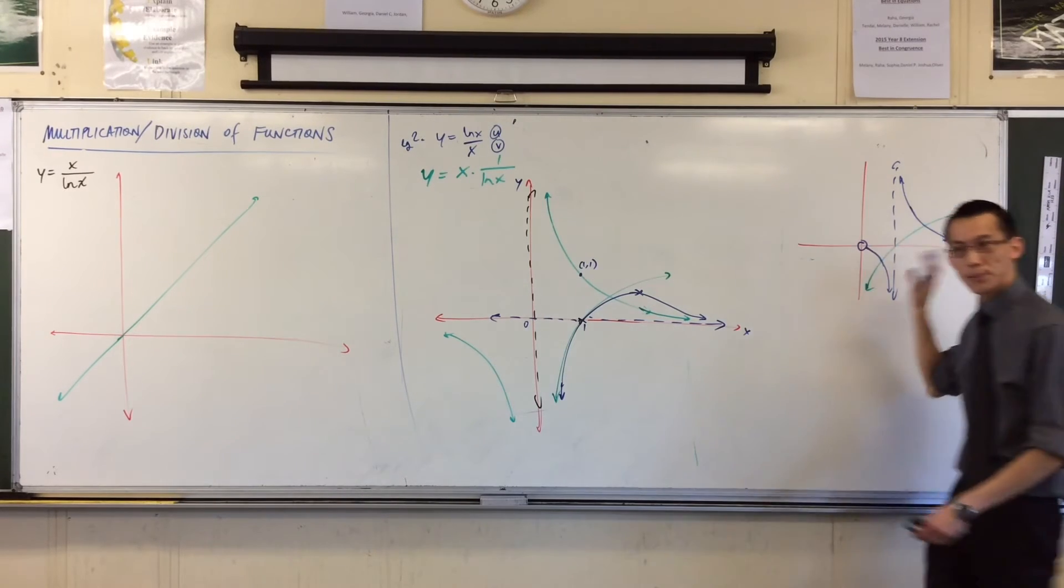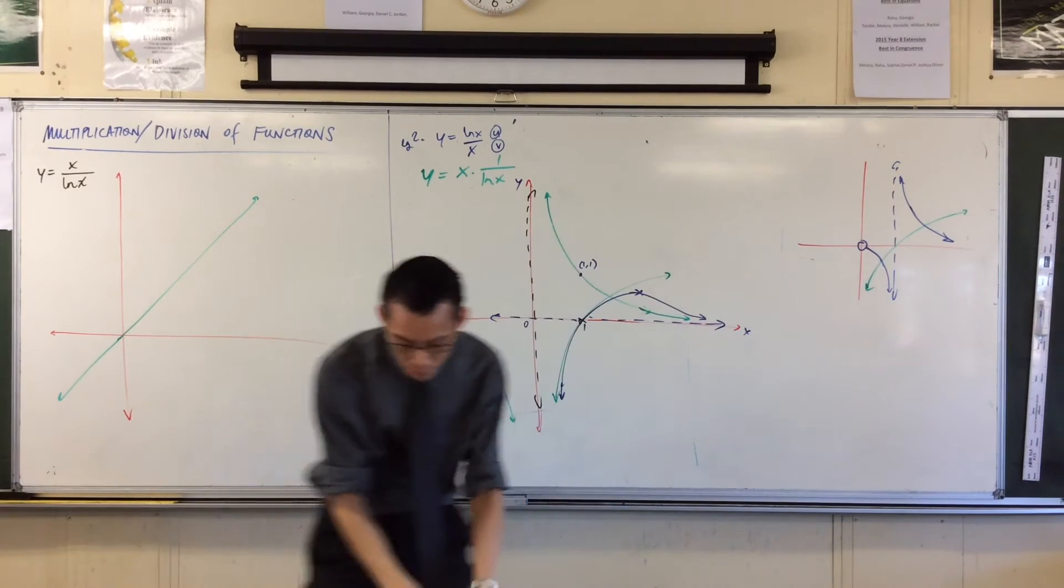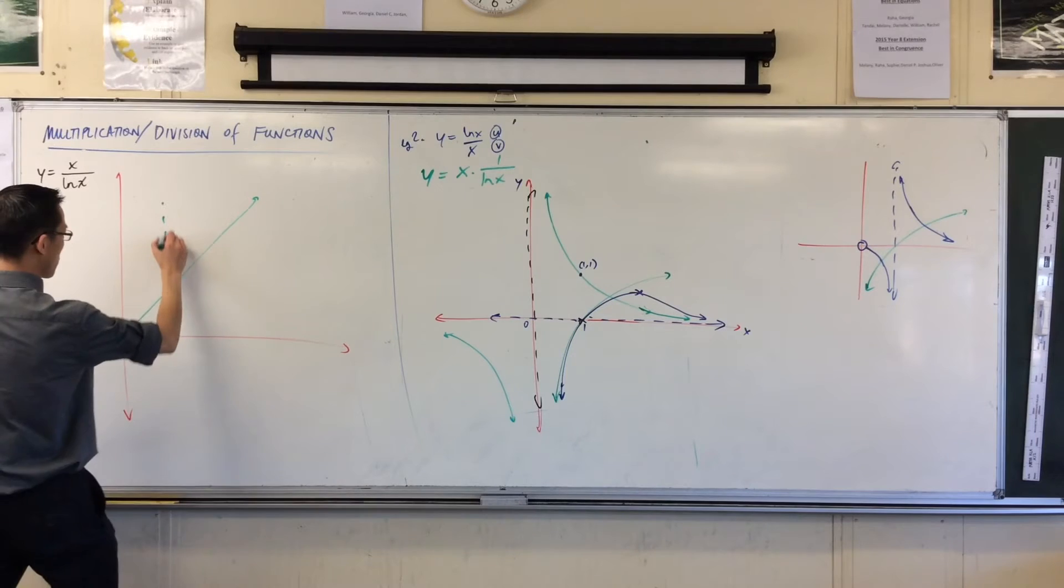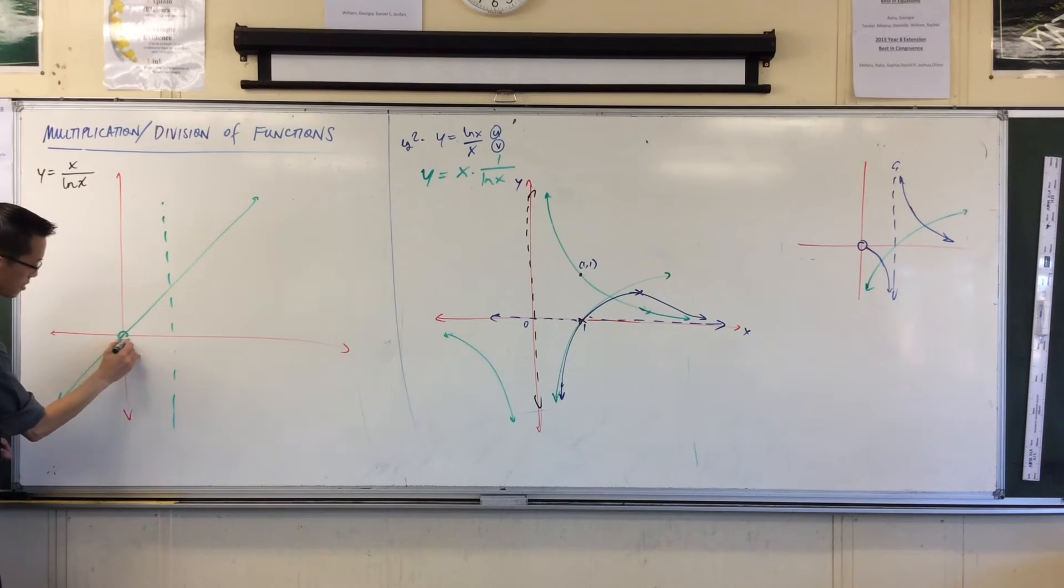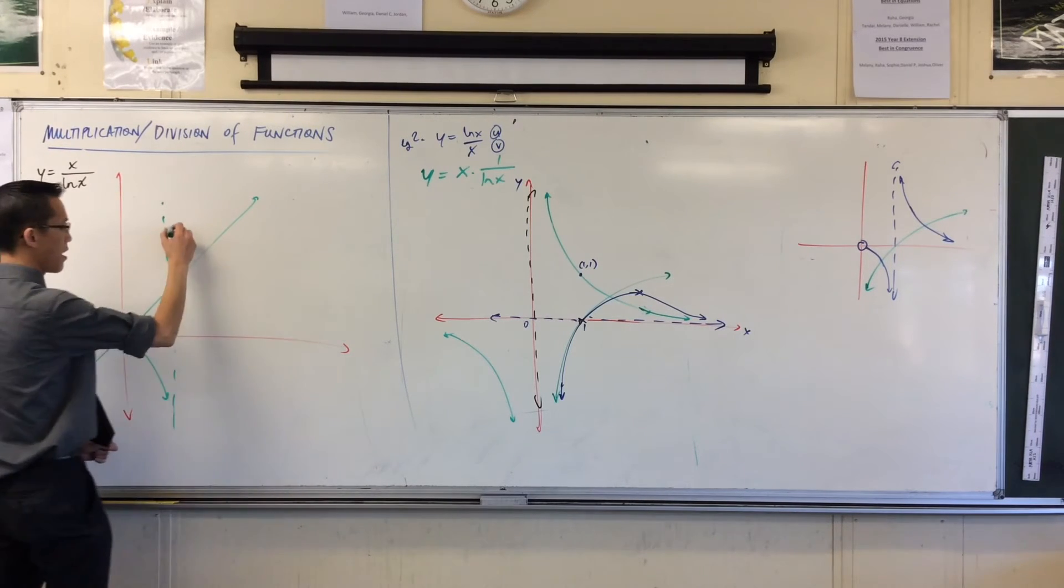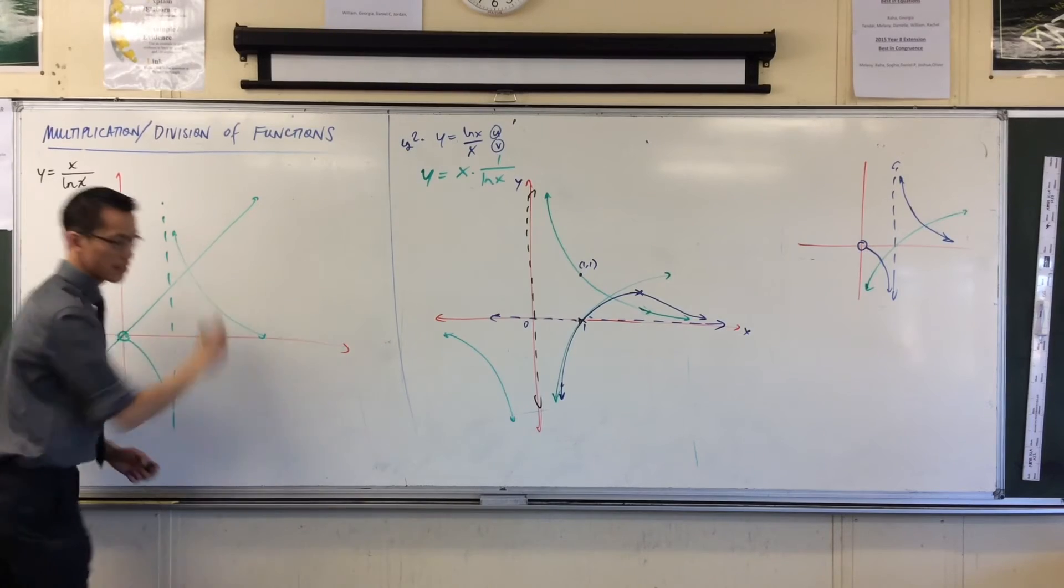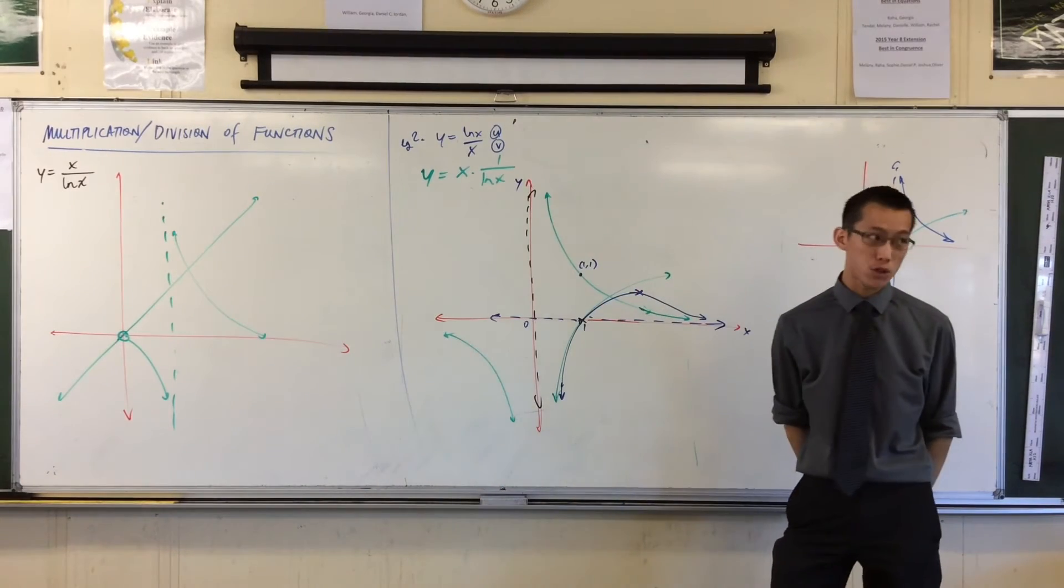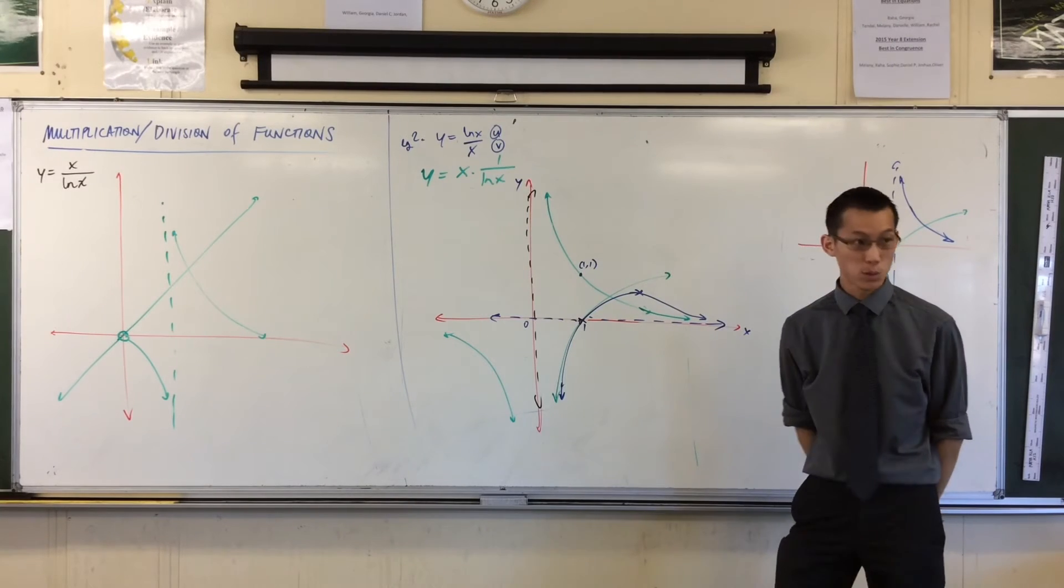So now that blue graph, I'm going to put over here as one of my components. So I've got this kind of shape. And this kind of shape. So now, when I think about multiplying these together, multiplying.